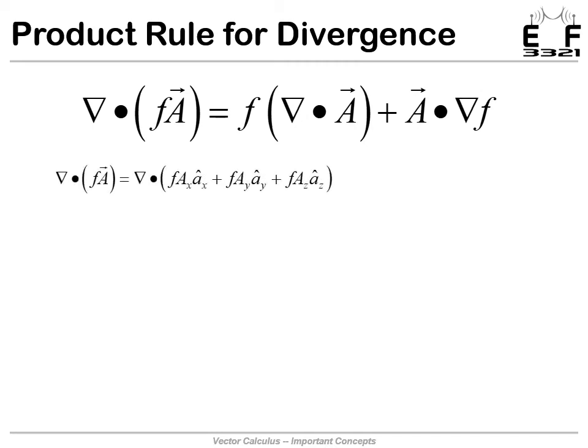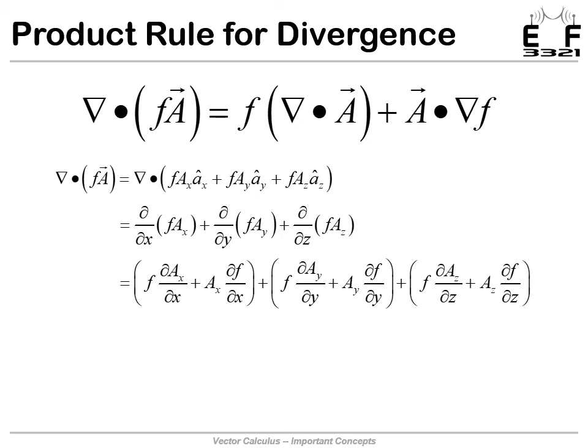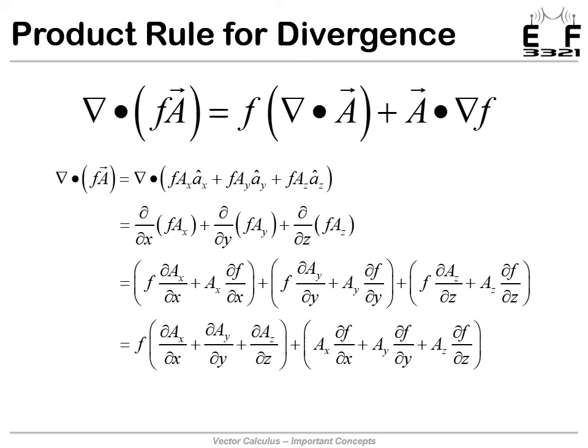The first thing we'll do is expand F times A. So A just has an X, a Y, and a Z component. I could have expanded this in any coordinate system. I chose Cartesian here. Then we'll apply the divergence. That means the partial derivative with respect to X times the X component of what was in here, plus the partial derivative of Y operating on the Y component, plus the partial derivative of Z operating on the Z component. Now I can apply the ordinary product rule. I do that for each term and I end up here.